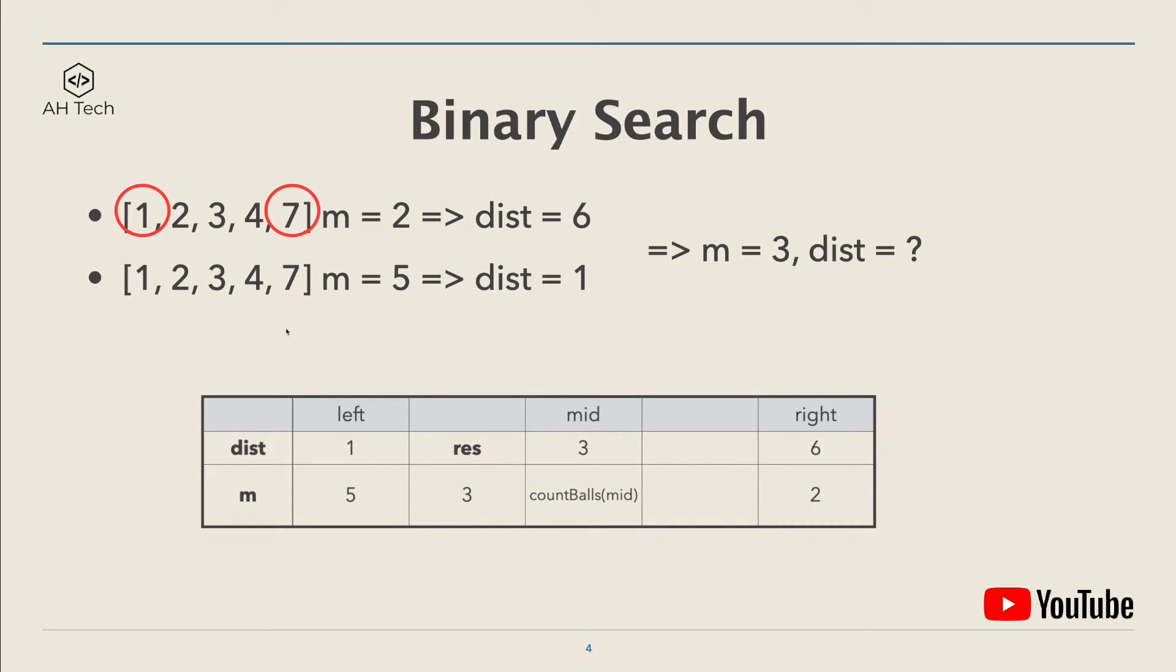On the other hand, if we can put five balls on the array, then it's obvious that the largest minimum distance would be 1. You can think of distance 1 as the left boundary in binary search and distance 6 as the right boundary.